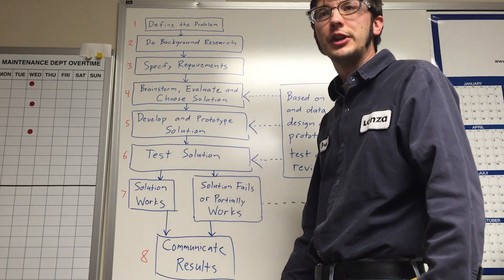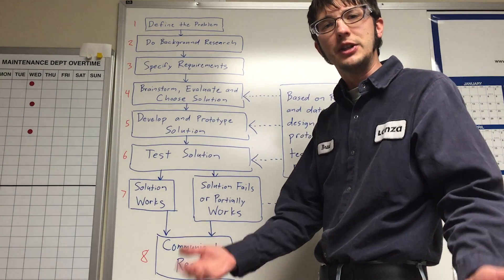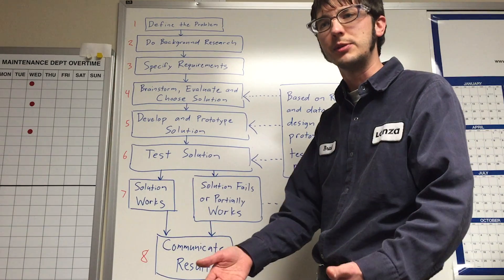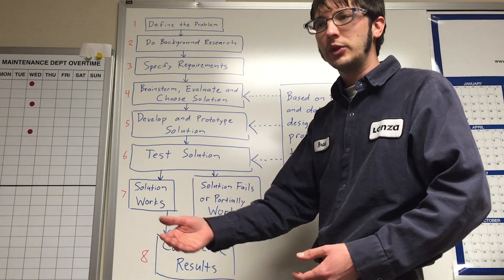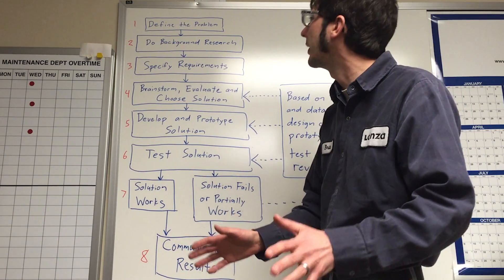Step two is to do background research. Learn about the process or learn about the equipment that you're having issues with. Talk to some of the senior engineers, experts at the plant that have experience with it. Look up manuals, research files, all that good stuff to understand what should be going on.